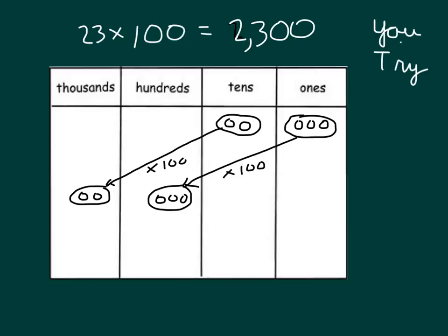Notice again, when we multiply by 100, the group shifts 2 places on over. So if we had digits, the digits would shift 2 places when we are multiplying by 100, so that the ones are worth hundreds, the tens are worth thousands.